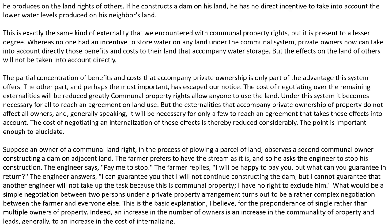The partial concentration of benefits and costs that accompanies private ownership is only part of the advantage this system offers. The other part, and perhaps the most important, is that the cost of negotiation over the remaining externalities will be reduced greatly. Communal property rights allow anyone to use the land. Under this system, it becomes necessary for all to reach an agreement on land use, but the externalities that accompany private ownership of property do not affect all owners, and generally speaking, it will be necessary for only a few to reach an agreement that takes these effects into account. The cost of negotiating and internalizing these effects is thereby reduced considerably.